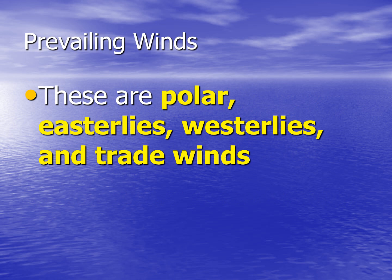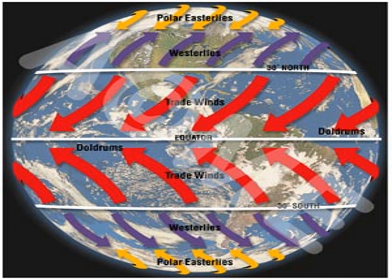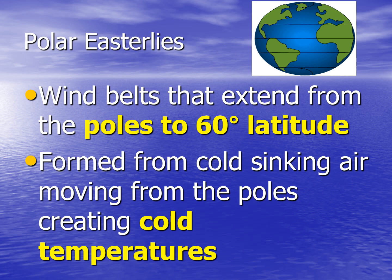There are four main types of prevailing winds: polar easterlies, westerlies, and trade winds. Here's an illustration showing each prevailing wind's location and direction — make sure you know these. Polar easterlies are wind belts that extend from the poles to 60 degrees latitude. These are formed when cold air sinks, moving the air from the poles toward 60 degrees latitude.